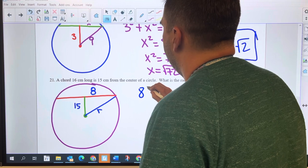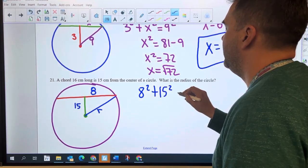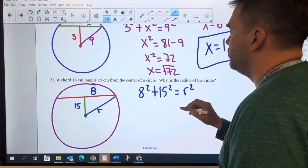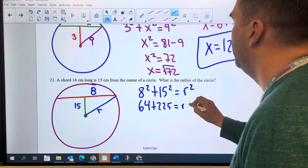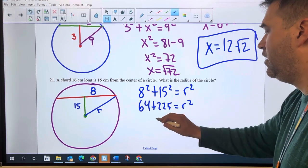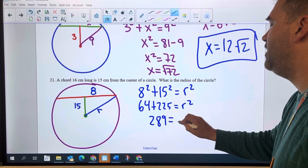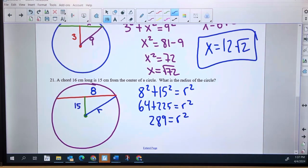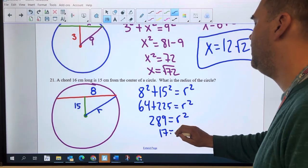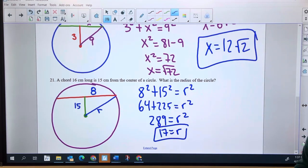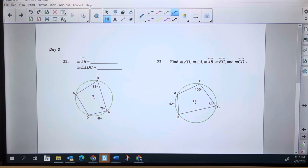Eight squared, 15 squared equals R squared. We got 64 plus 225 equals R squared. 289 equals R squared. 289 is a nice one, I think. Yep. 17. So 17 equals R. I'll stop there.